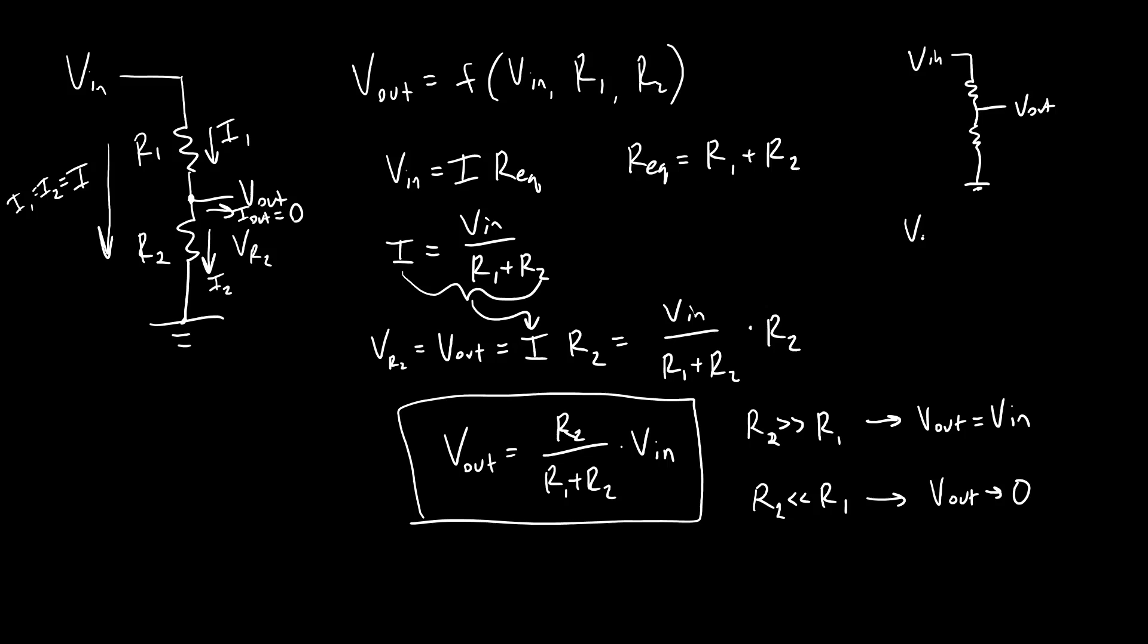Another way that you may see it done is with some variable resistor that acts as a sensor. So there are various types of resistors that change their resistance based on different physical parameters. So for example a photo resistor is a very common one. This is the symbol for a photo resistor. Its resistance changes based on the amount of light hitting it. So the more light that is hitting this photo resistor the lower its resistance.